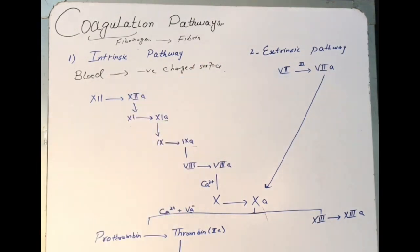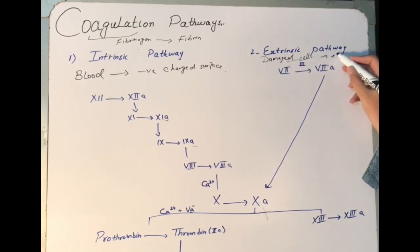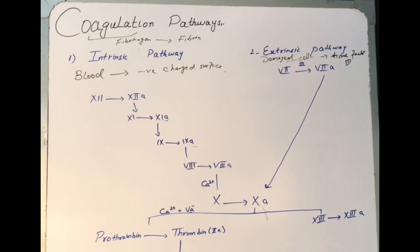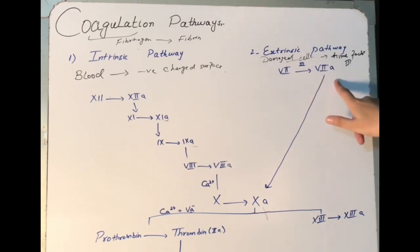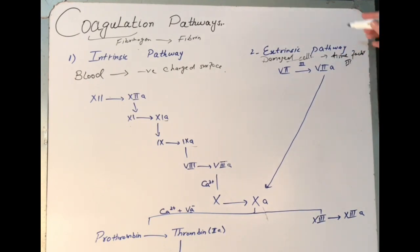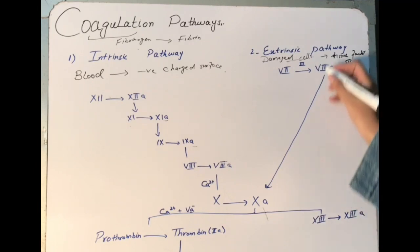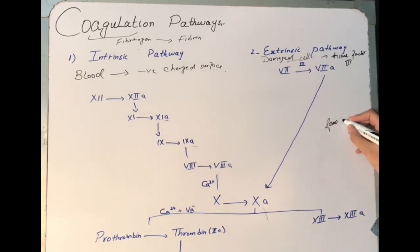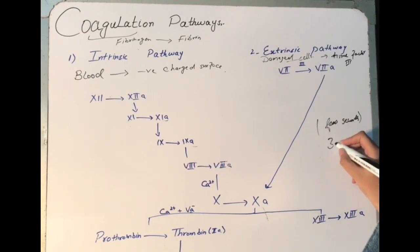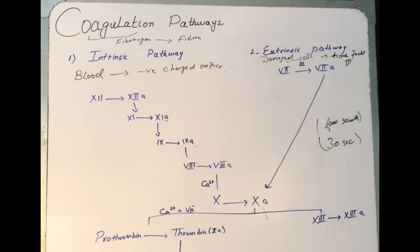Now moving to the extrinsic pathway. The extrinsic pathway begins when damaged cells release tissue factor, which is factor 3. This tissue factor causes the activation of factor 7 into factor 7a, and factor 7a directly causes the activation of factor 10. This is a shorter pathway — it takes approximately 30 seconds — whereas the intrinsic pathway takes about four to six minutes.